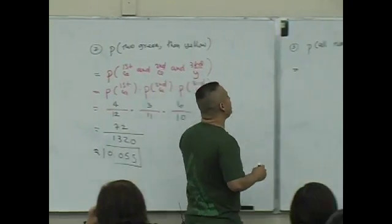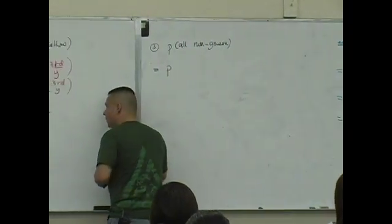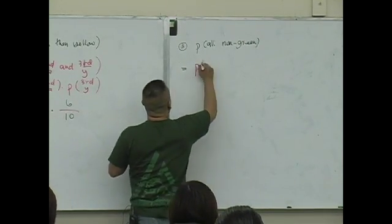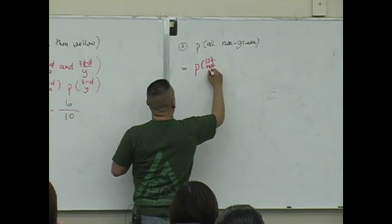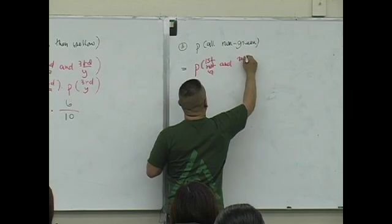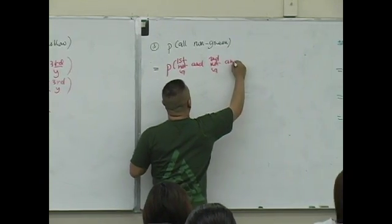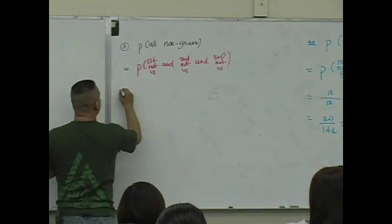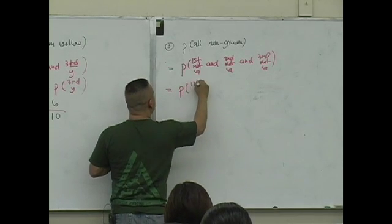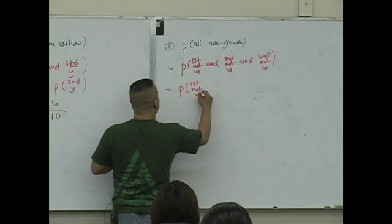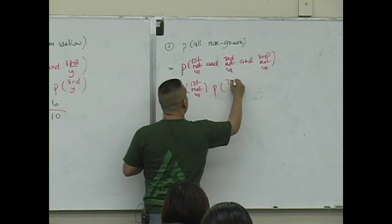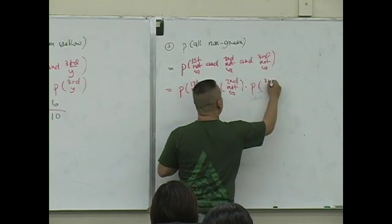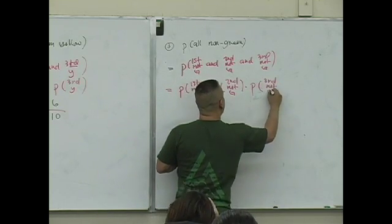The probability that they're all not green — what does that mean? They're all not green. Doesn't that mean the first is not green, and the second is not green, and the third is not green? We're selecting three items, which means we have three probabilities to compute and then multiply, because we can generalize the multiplication rule.